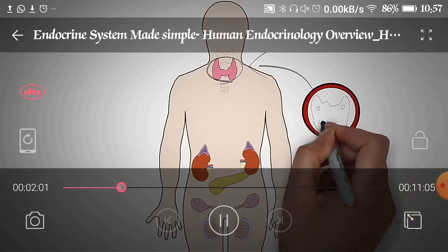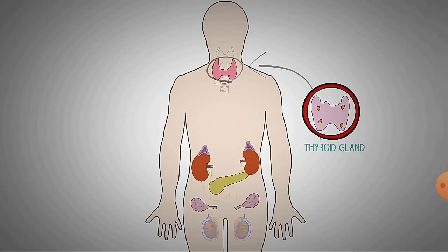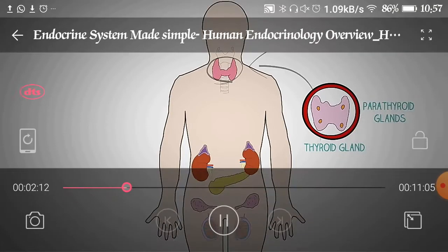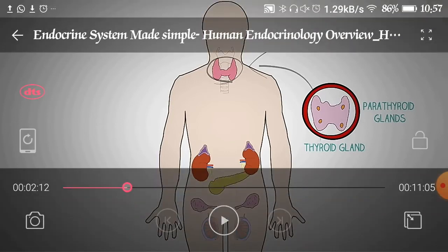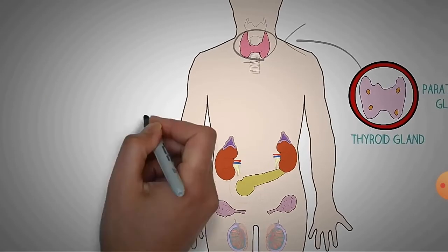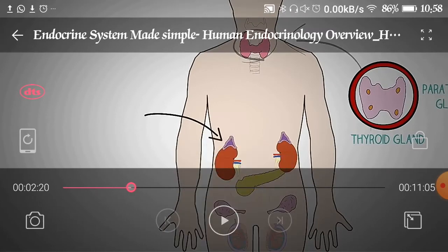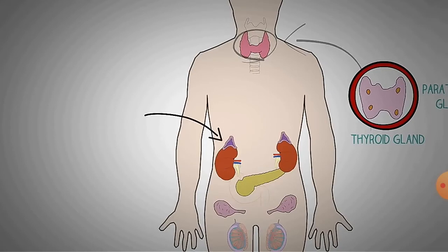The thyroid gland is located at the mediastinum part of the body and has a butterfly shape. There are four tiny structures located at the lateral positions on the back side of the thyroid gland, called the parathyroid glands. The thyroid gland secretes T3 (triiodothyronine) and T4 (thyroxine), which are responsible for various metabolic functions. The parathyroid gland secretes parathyroid hormone, which is responsible for controlling calcium and phosphate levels in the blood.